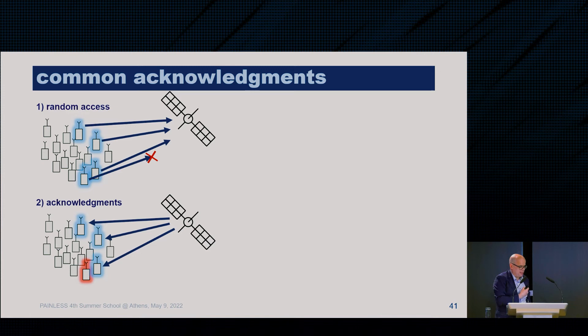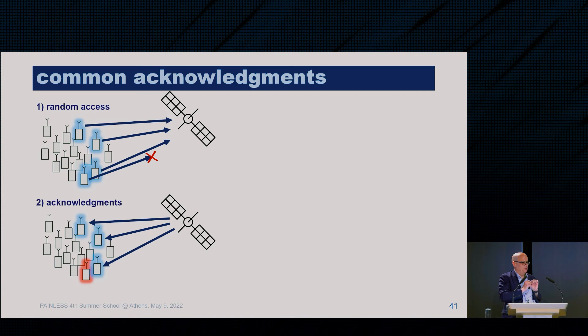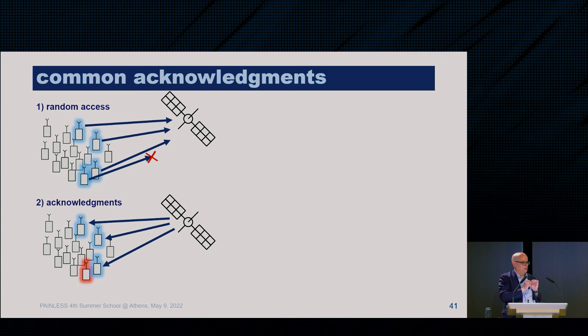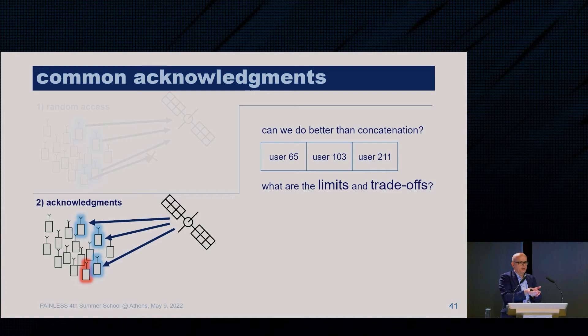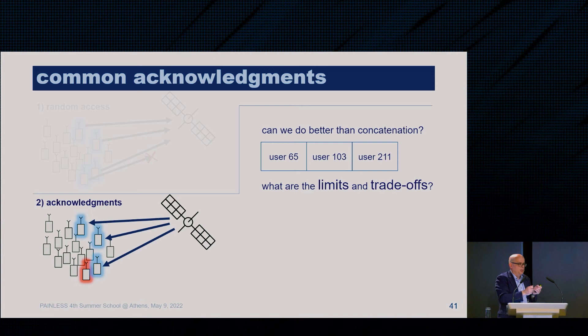There is a simple solution: whoever you decoded, you just list their names in the downlink. But is there a better way? Do we need to use a fixed number of bits per user? What are the limits of this trade-off? Can we reliably acknowledge users using fewer bits? This matters when you have a fixed packet length — you want a certain number of L bits sent in the downlink that tells everybody whether their message was decoded, but you cannot fit all users within L bits.